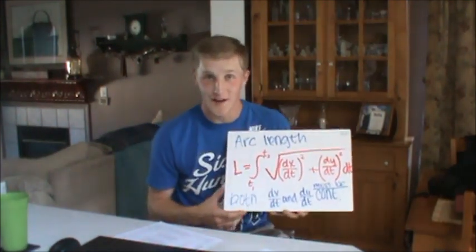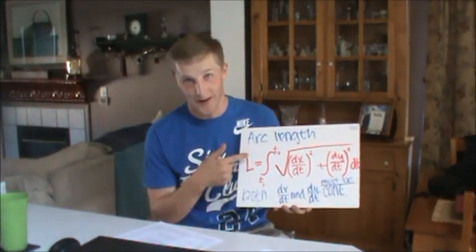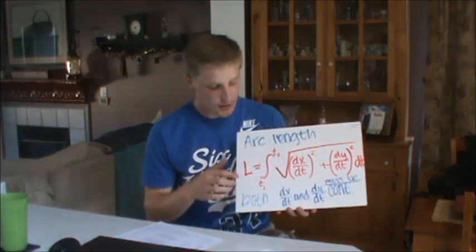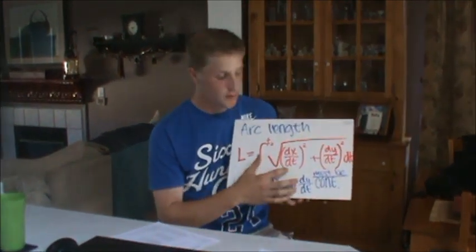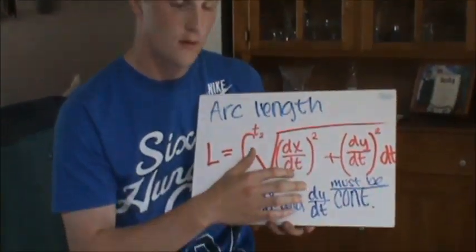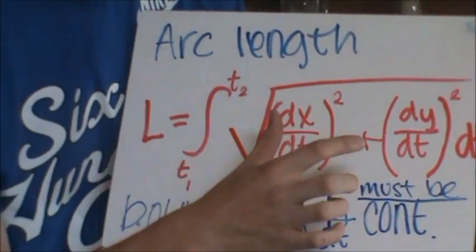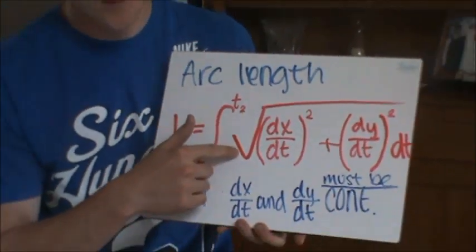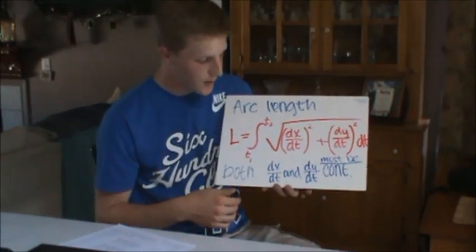Our next portion is going to be arc length. Arc length is your integral of your two derivatives — dx over dt plus dy over dt — both of those are squared and then square rooted. Don't ask me why. Ask Williams. He'll probably know.